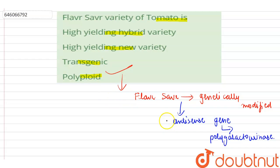So the correct option is transgenic. It is not a hybrid variety; it is not produced by mixing two genes of different varieties of tomato or of different crops.